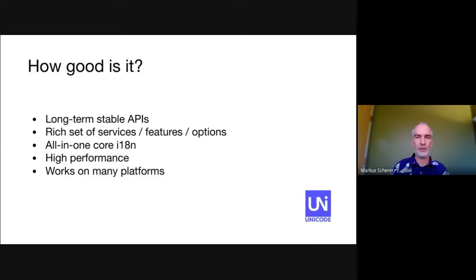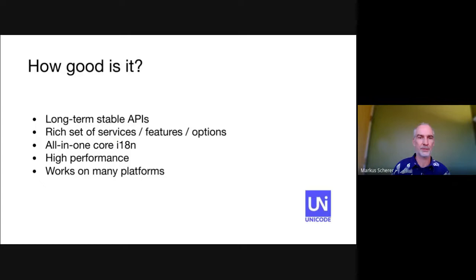ICU has many benefits. For example, we keep our API stable so that developers can upgrade to newer versions without rewriting their code using ICU. Some of our APIs have been stable for 20 years. We keep new APIs in a draft state until we are confident that they work well. Performance is best for high volume text processing — for example, properties lookup, normalization, text segmentation, and collation.